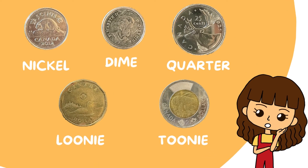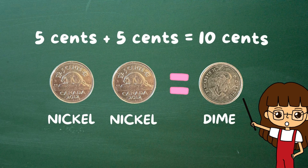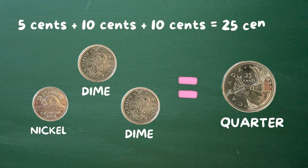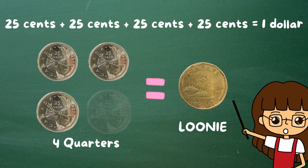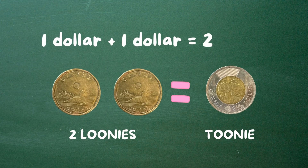What are the relations between those coins? They are interchangeable — you use very simple math here. Two nickels make a dime. One nickel and two dimes added up make a quarter. Four quarters added up make a loonie. Two loonies make a toonie.